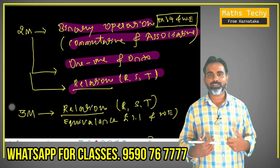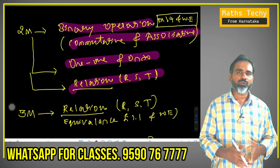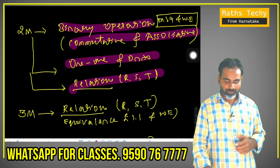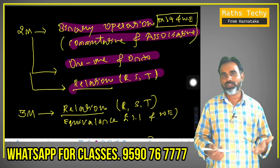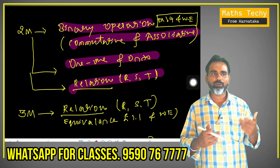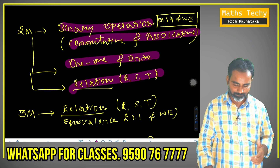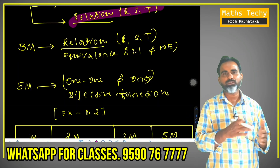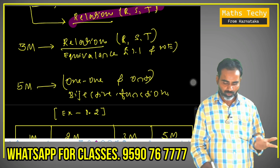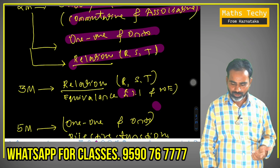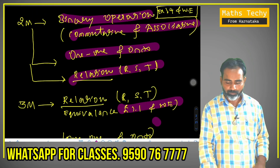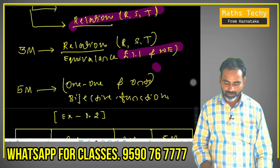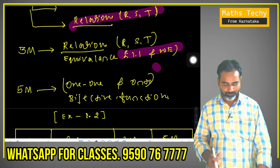Maximum expectation will be in binary operations: commutator or associator. One-to-one function and reflexive, symmetric and transitive will be needed. Reflexive, symmetric and transitive will be easily done in 3 marks. In binary operations, commutator or associator is an almost fixed question. Three marks: commonly equivalence, reflexive, symmetric and transitive will be checked. Exercise 1.1 or worked examples, and 1.4 or worked examples. Two marks are binary operations, three marks: 1.1 or worked examples.